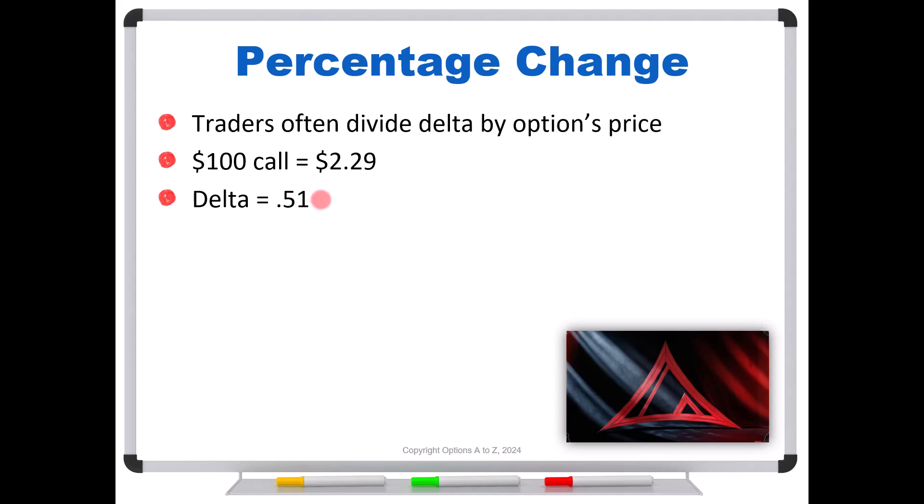Now I say roughly because there's gamma in here, which is going to bump it up a little bit more, but it should be roughly $2.80. So if the stock rises $1, we should see an option's price of about 280, or a bump of about 22.3%.